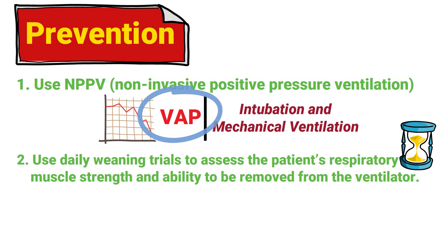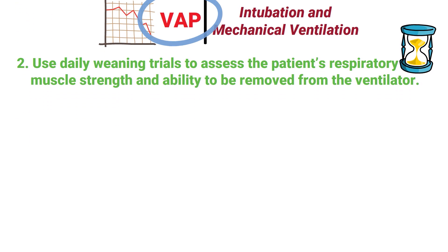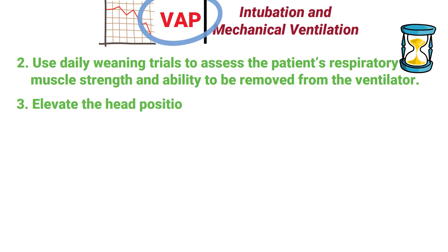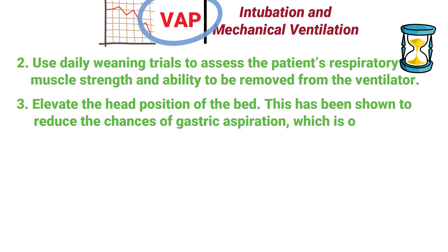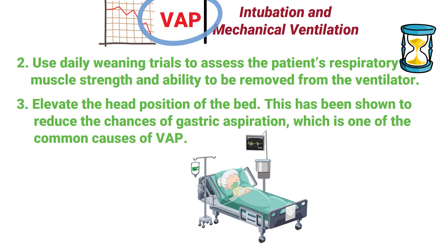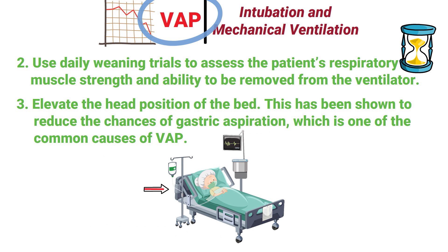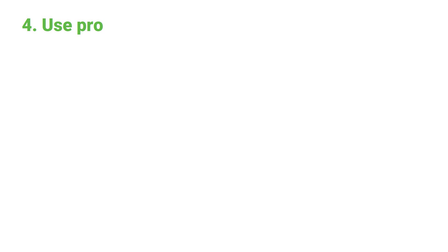The next VAP prevention strategy is to elevate the head position of the bed. This has been shown to reduce the chances of gastric aspiration, which is one of the common causes of ventilator-associated pneumonia. You can strive to keep the head of the bed elevated to 45 degrees.